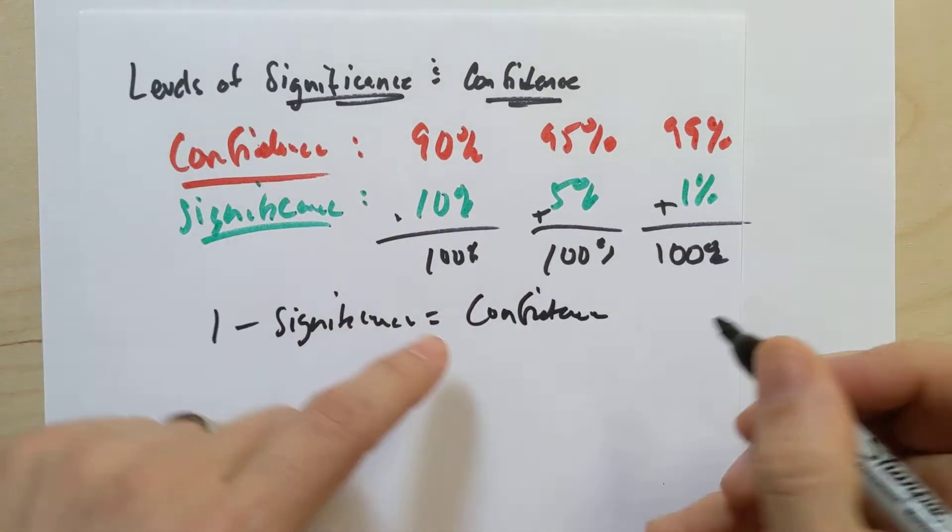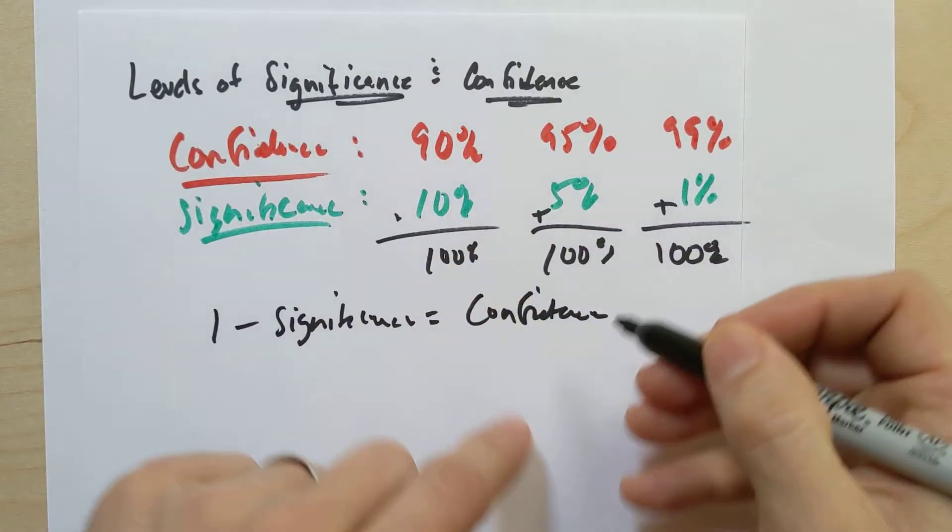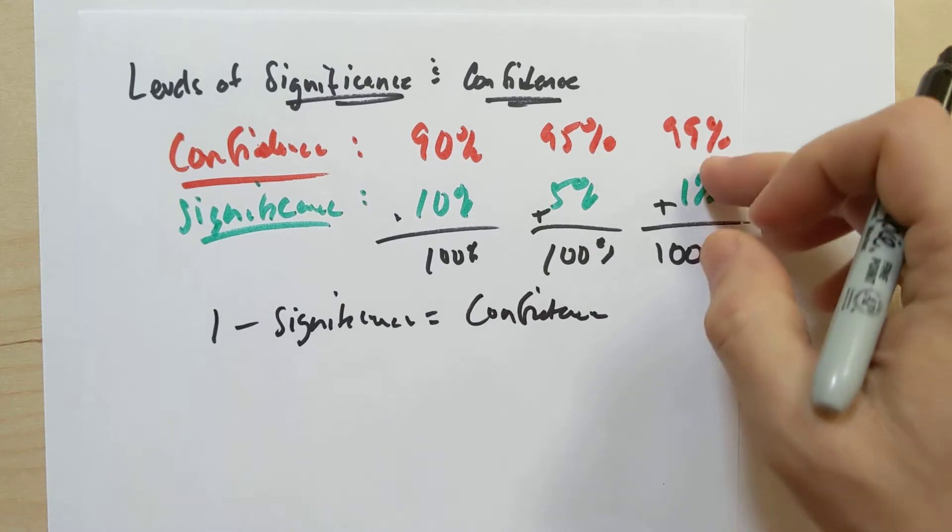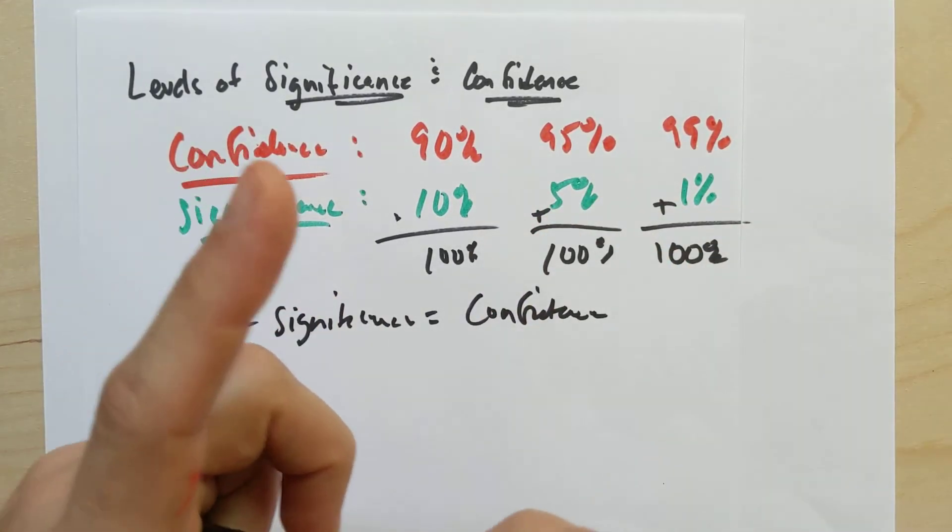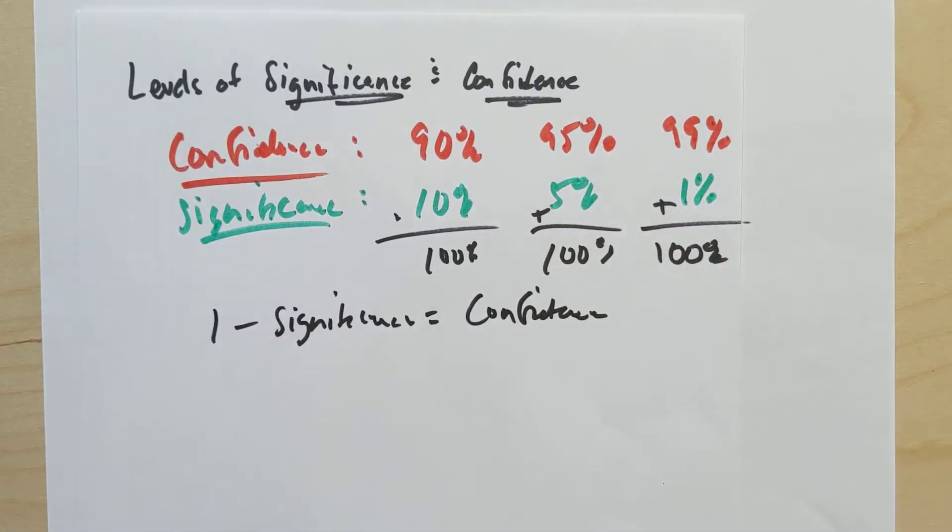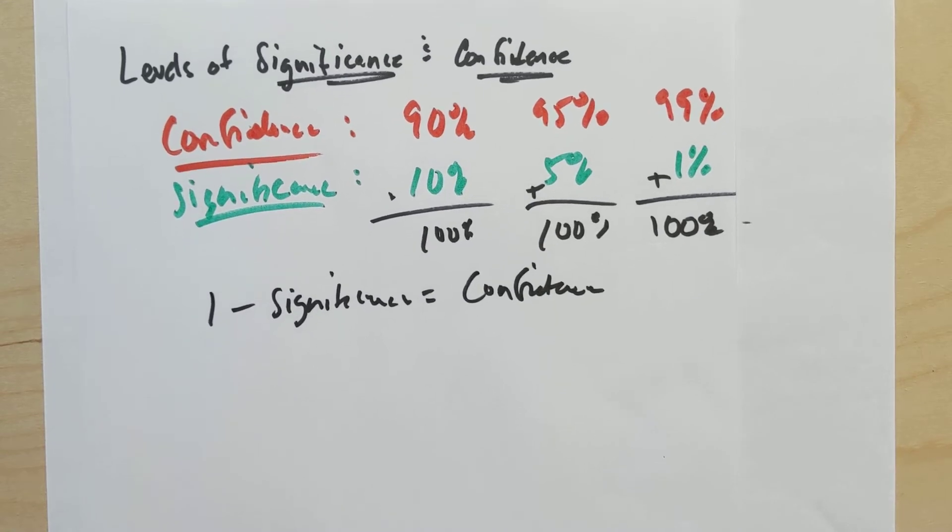So 1 minus 10% is 90%. 1 minus 5% is 95%. 1 minus 100 minus 1% is 99%. And so why do we see connections like that? Well, again, when we were making confidence intervals,